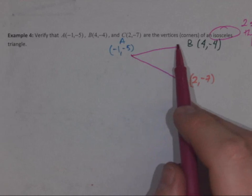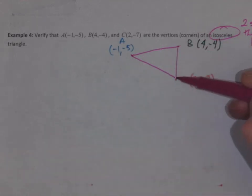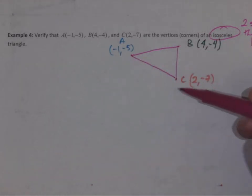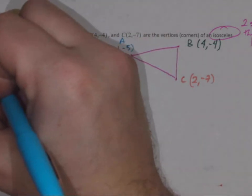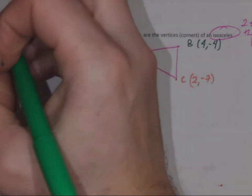So we need to find the length of AB, we need to find the length of BC, and we need to find the length of AC and compare all three to make sure that two are the same. So I'm going to find the length of AB. I'm going to do the length formula three times.